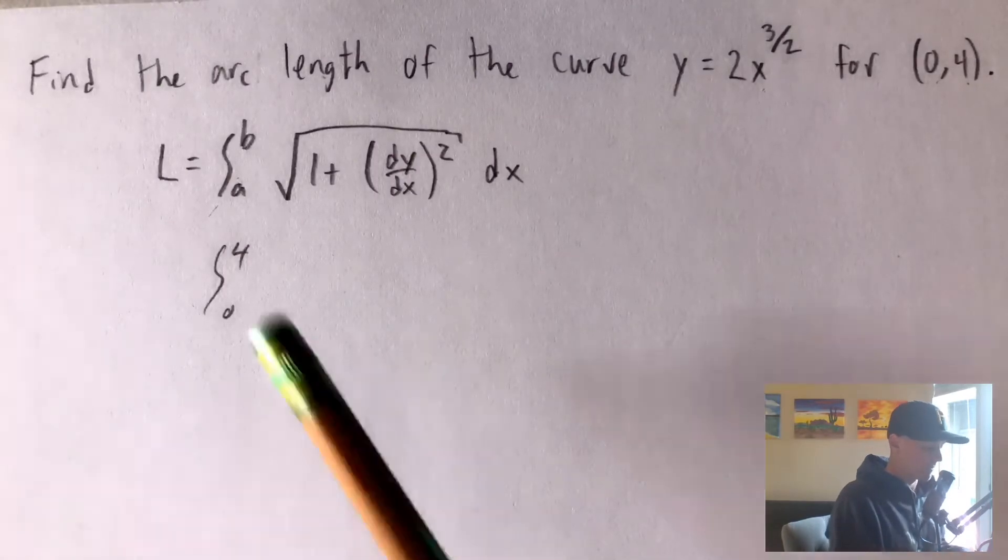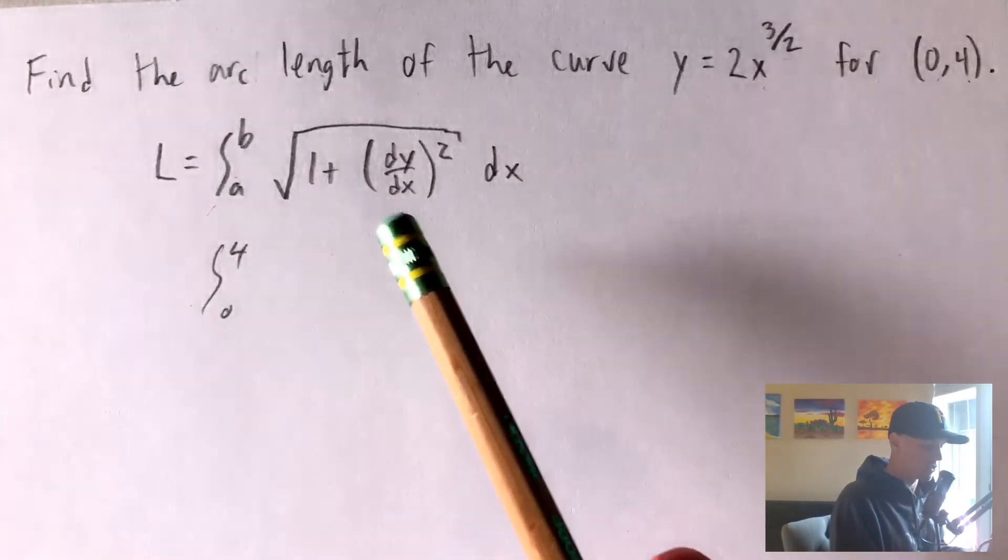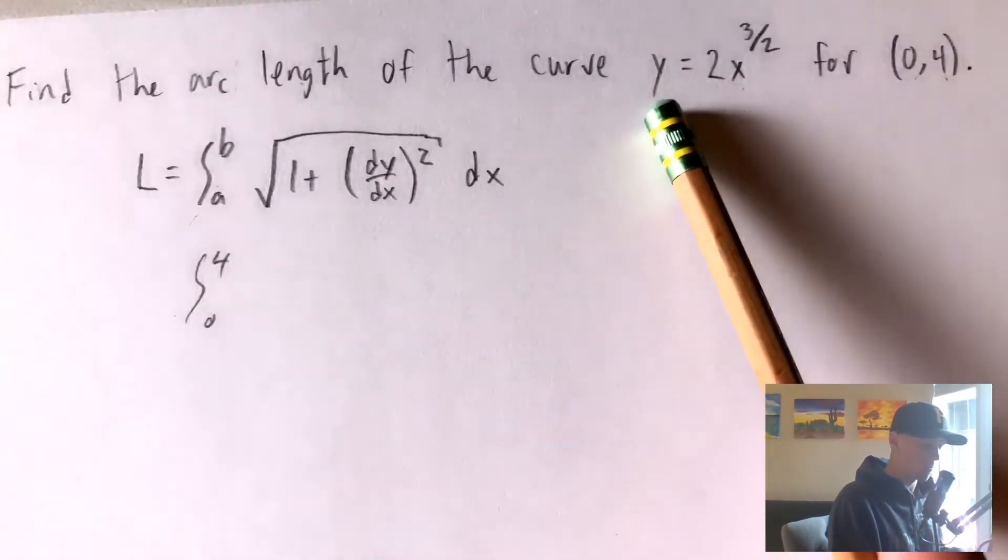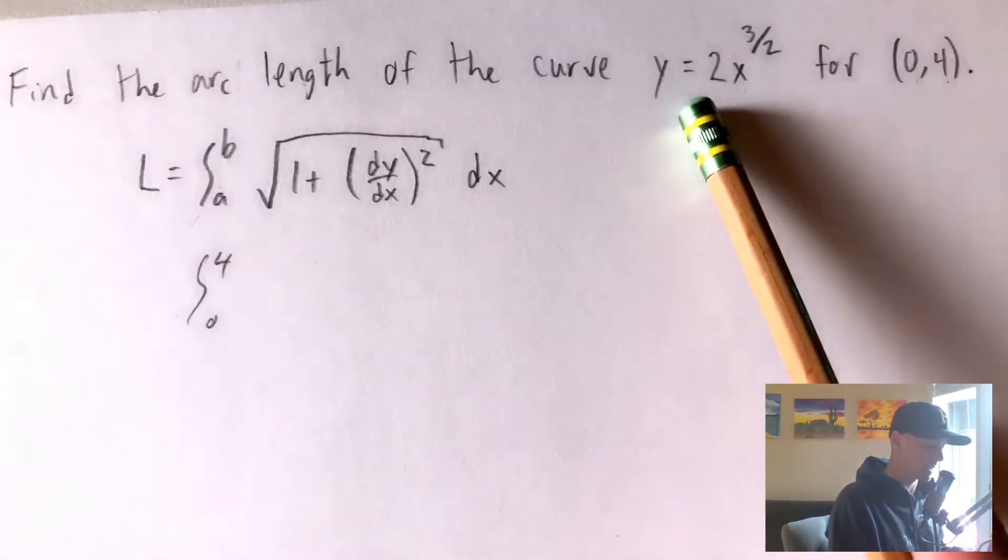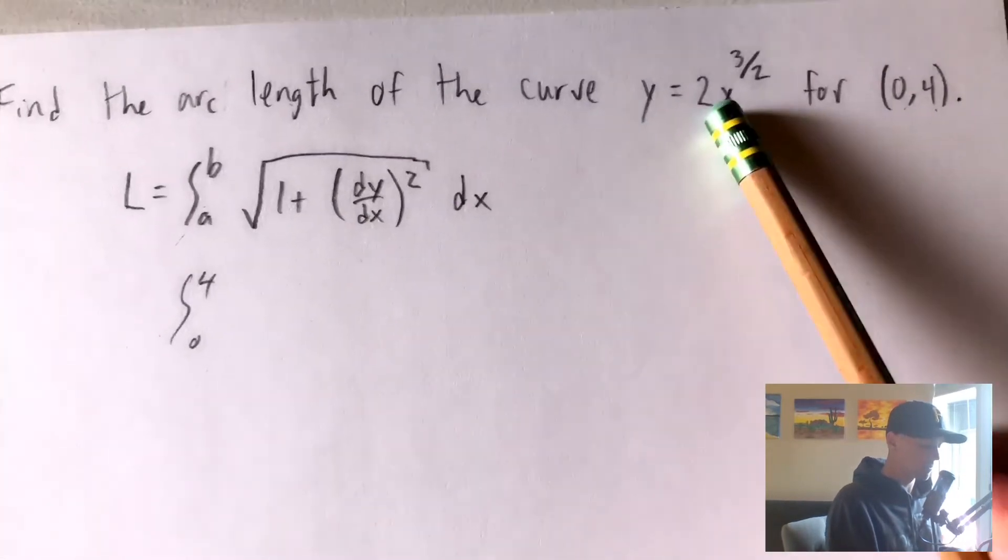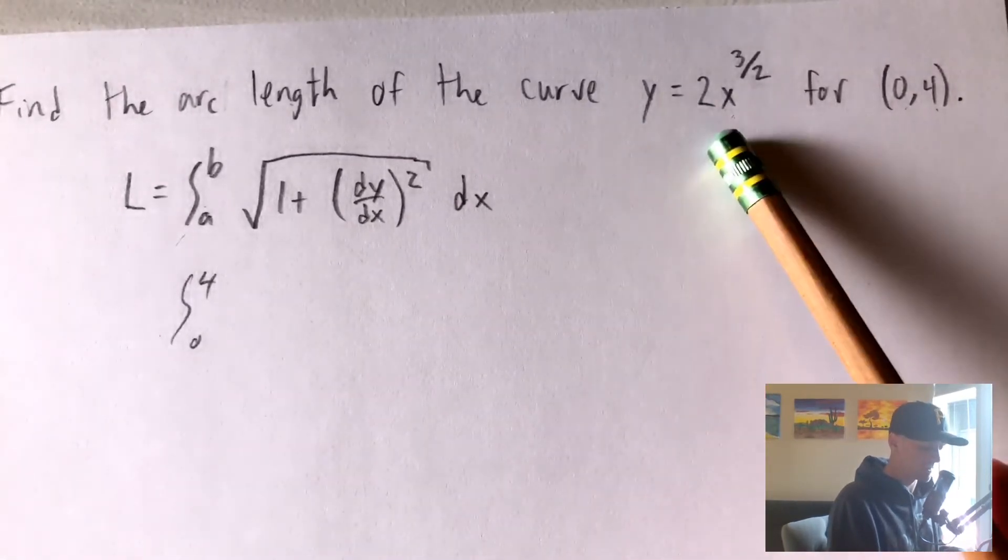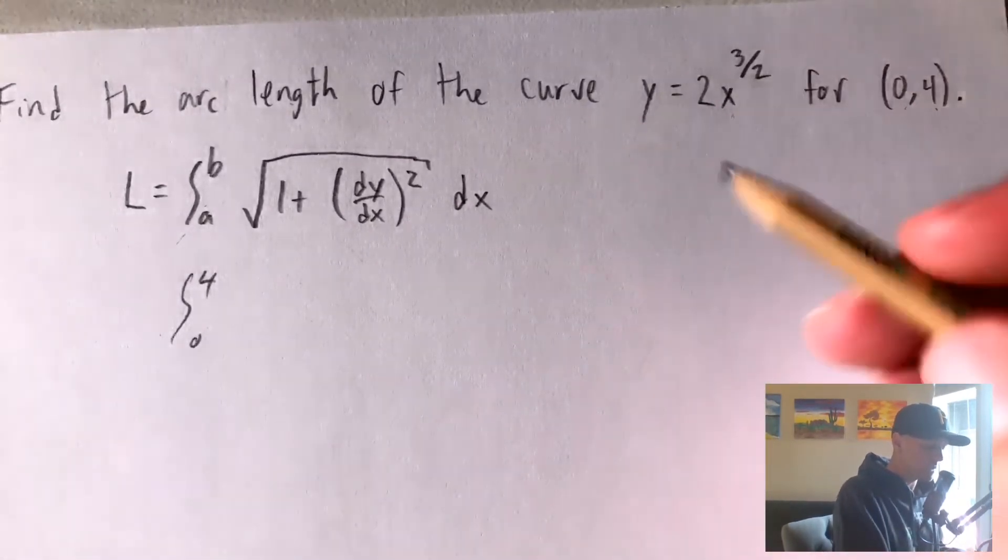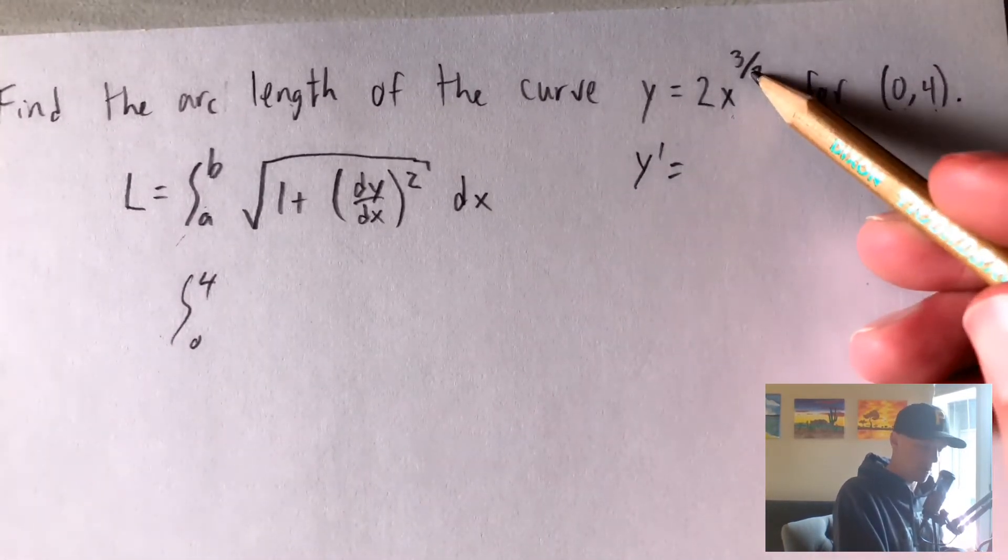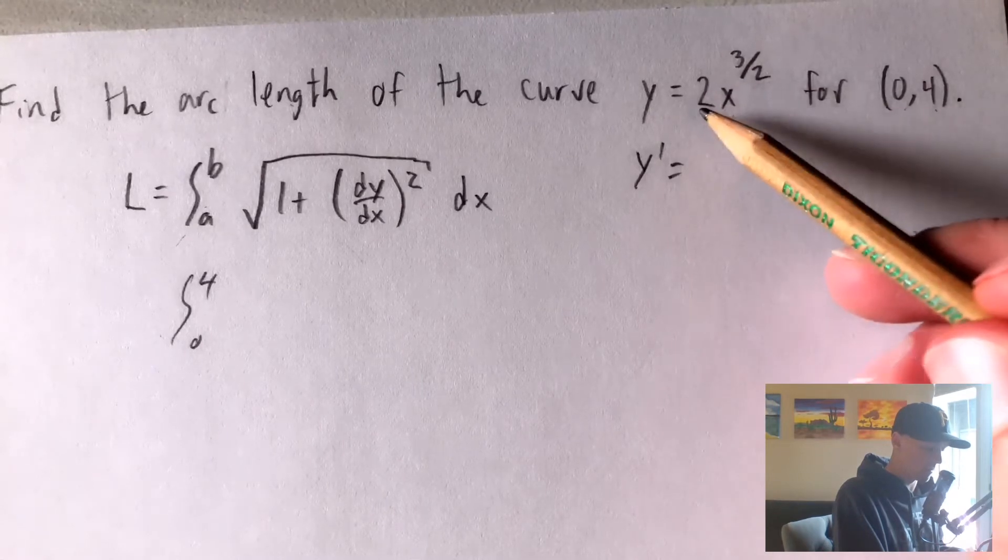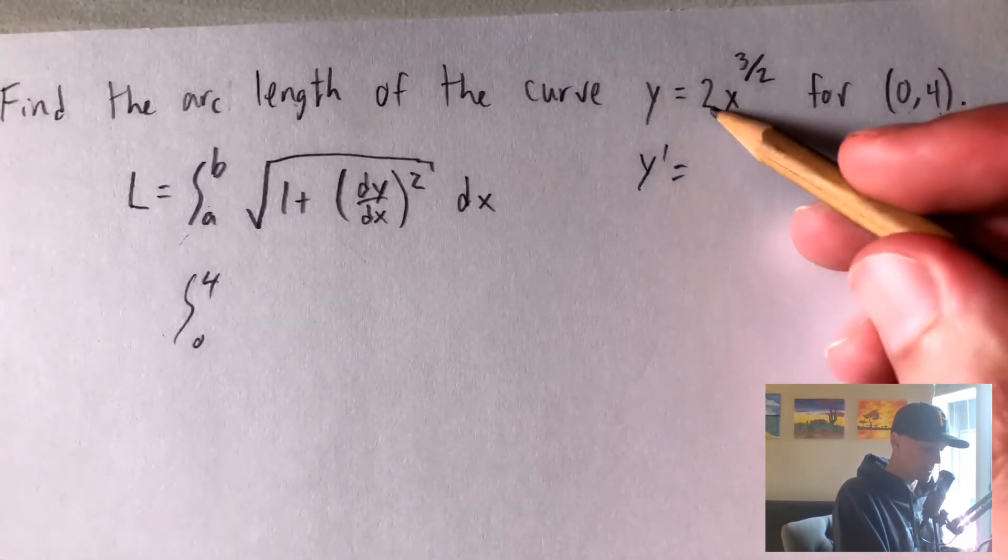And then we just have the square root of 1 plus the derivative of our function with respect to x. So we're just going to want to find the derivative of this function with respect to x and plug that in there. So the derivative of this with respect to x can just be found using the power rule. So y prime is just going to be, we're going to bring the power down in front. So bring the three halves down in front and multiply it by 2.